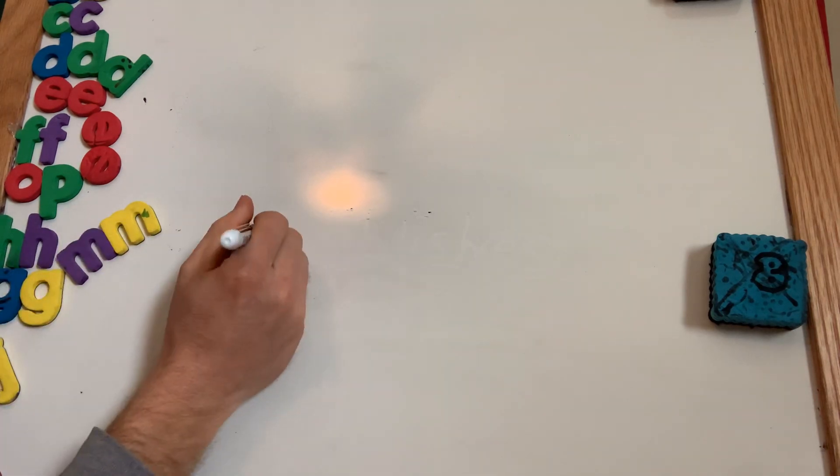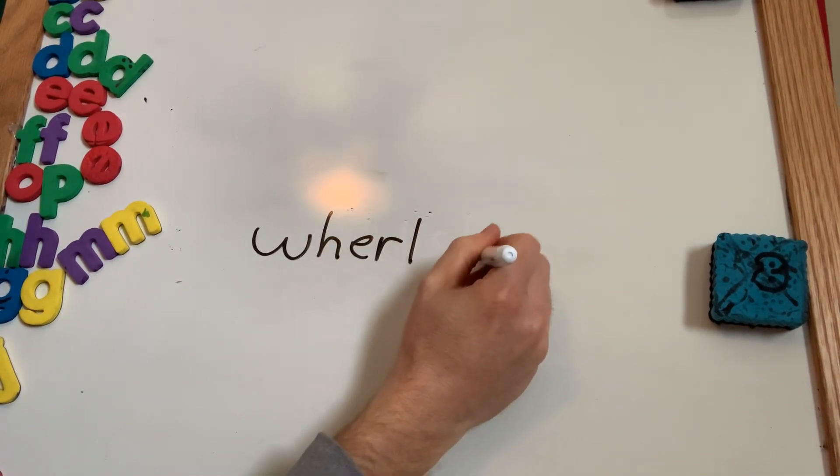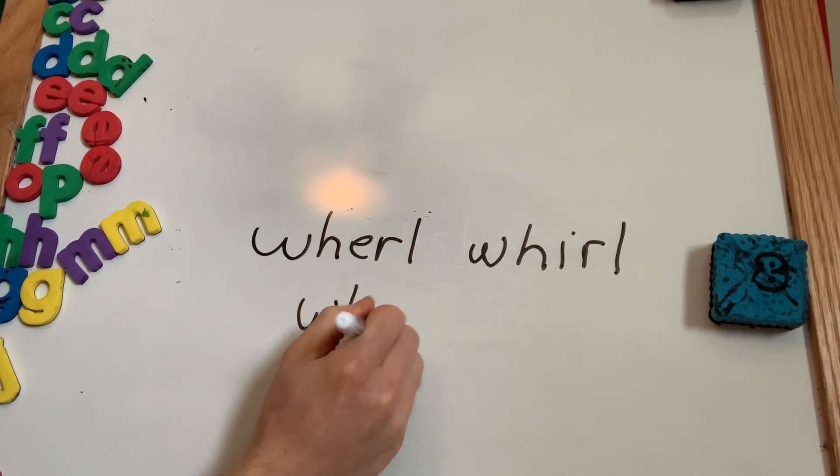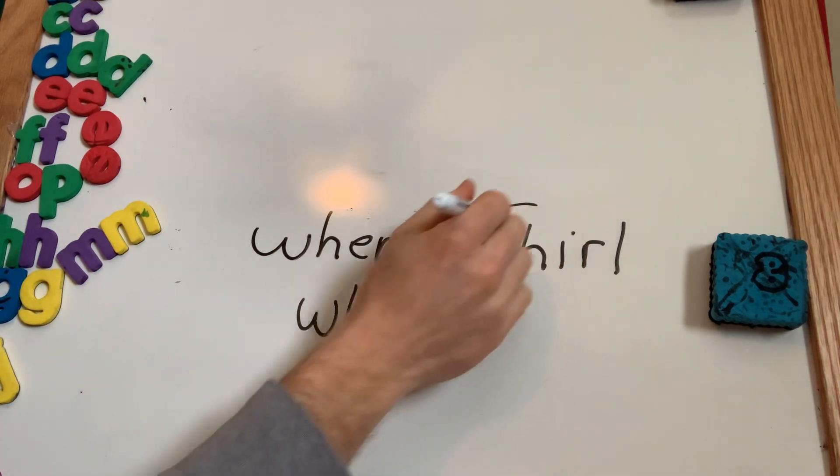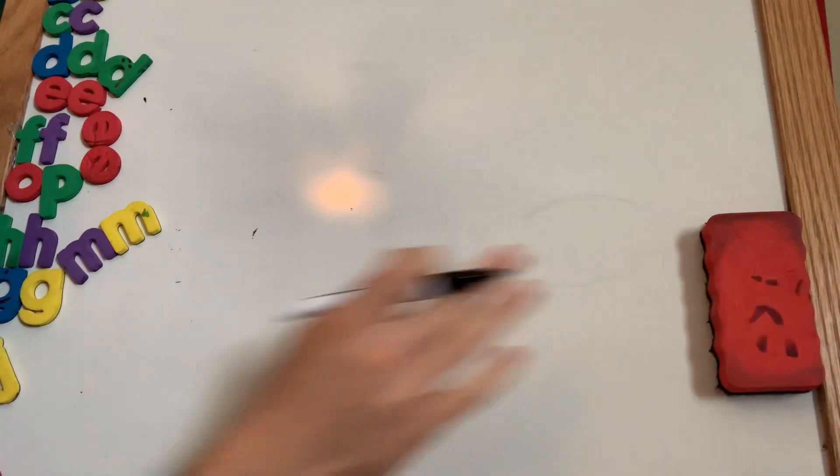Here's a hint with this word. Whirl. Now this word has a digraph at the beginning. Now try the three types of R-controlled vowels that make the sound er and see which one looks right. Whirl. Pause it and try it. Which one looks right? Whirl. This one's right. It's okay if you got it wrong. It's always okay to make mistakes.